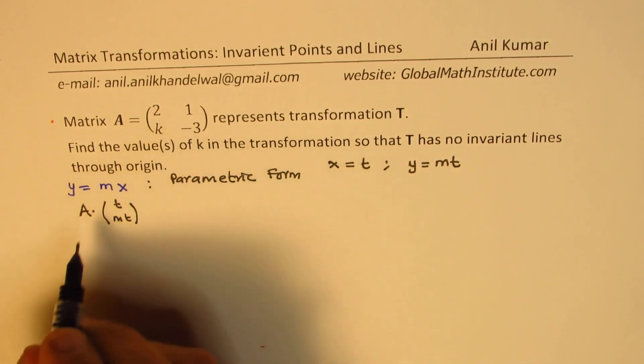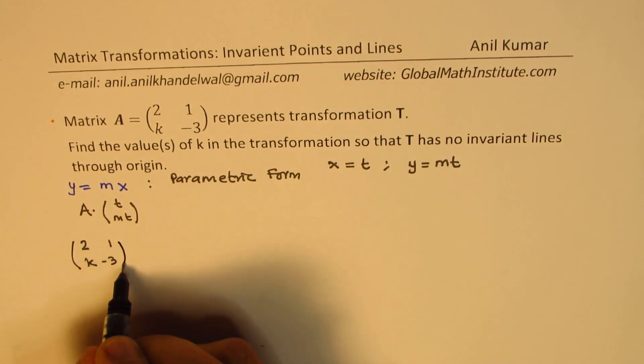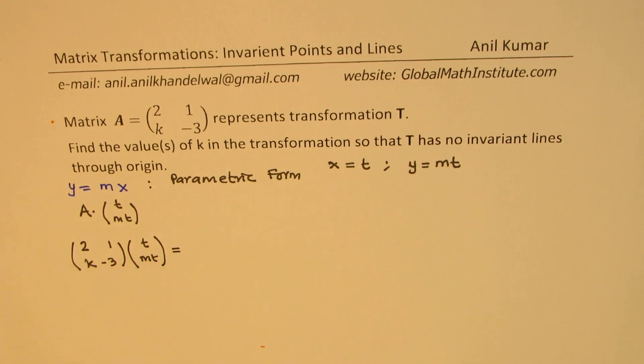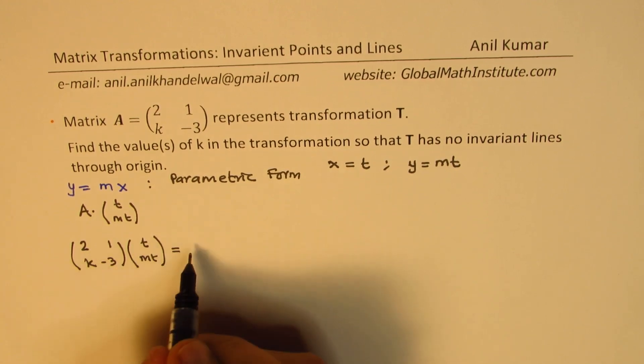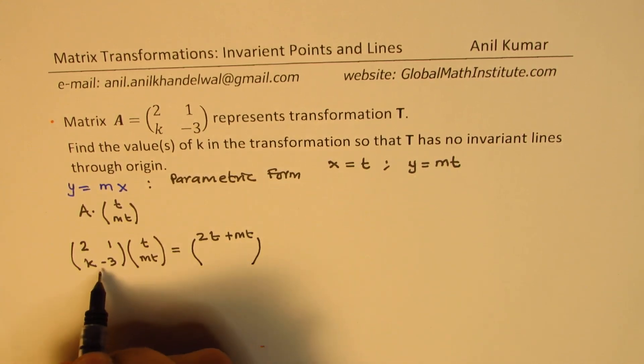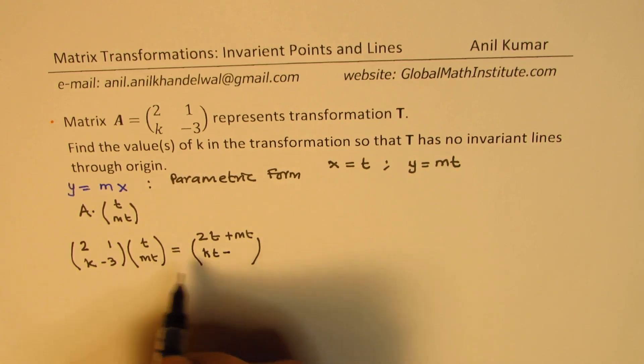So here A is given to us as 2, 1, k, minus 3. So this 2 by 2 matrix, when you get the transformation, the image will be 2t plus mt, and that would be kt minus 3mt.